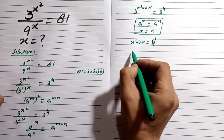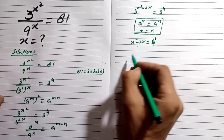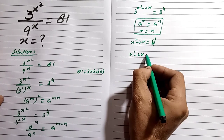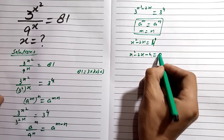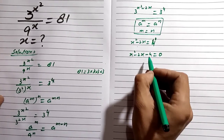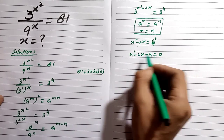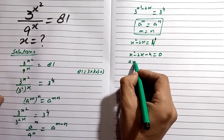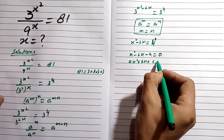We can subtract 4 from both sides, so x² minus 2x minus 4 equals 0. This is in quadratic equation form, which we can solve using the quadratic formula for ax² plus bx plus c equals 0.